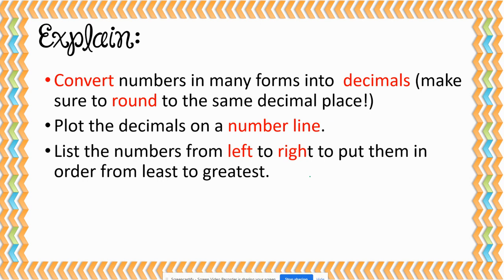When we are going to order our numbers, we convert our numbers into decimals, making sure we round to the same decimal place — if we use the tenths, we use tenths for all of them; if we use the hundredths, we use hundredths for all of them. Then we plot our decimals on a number line and list the numbers from left to right to put them in order from least to greatest.